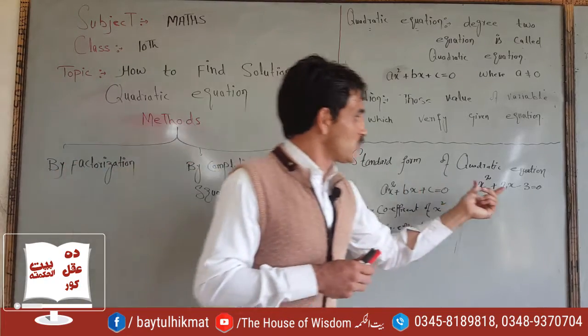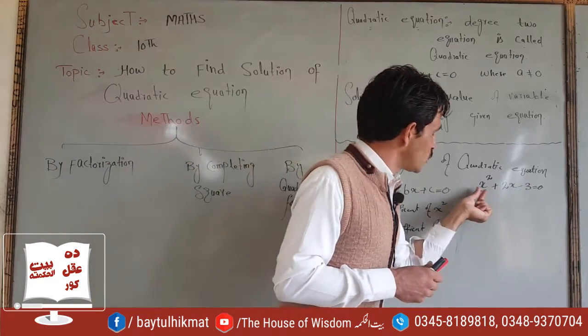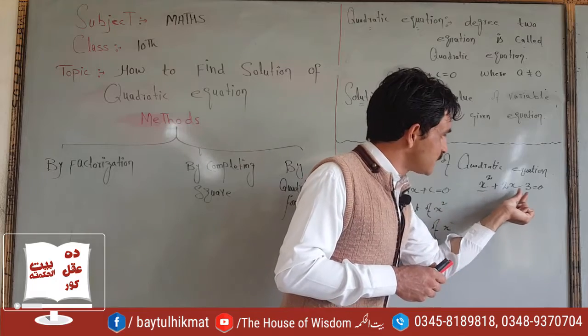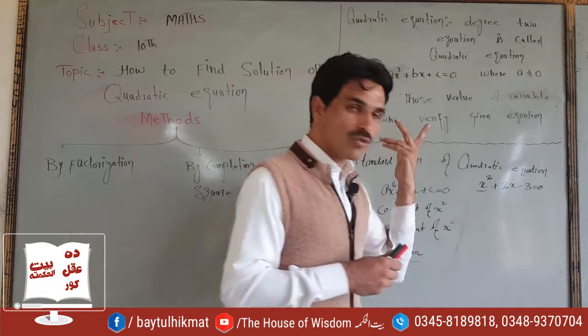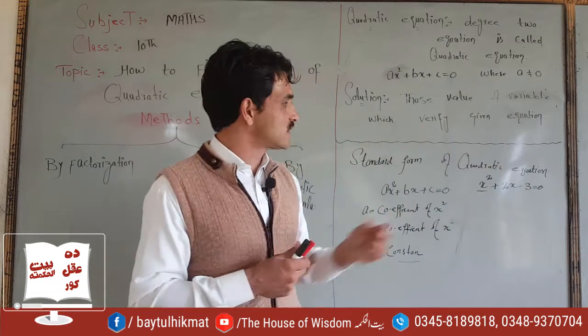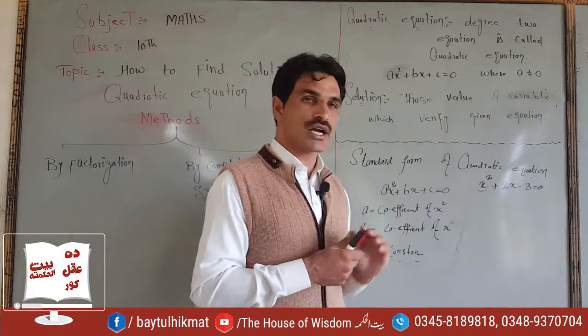For example, this equation: x squared plus 2x minus 3 equals zero. This is a quadratic equation. If we look at the degree, the degree is 2.